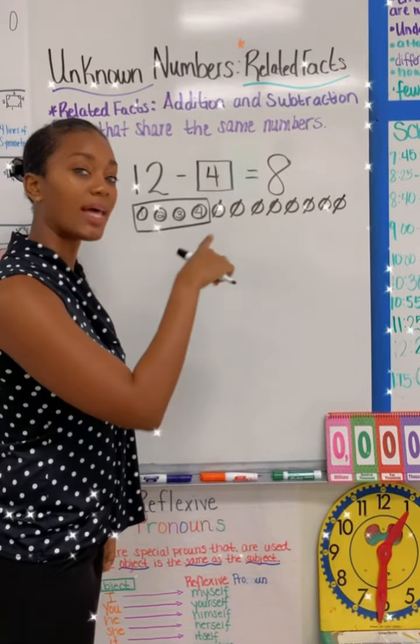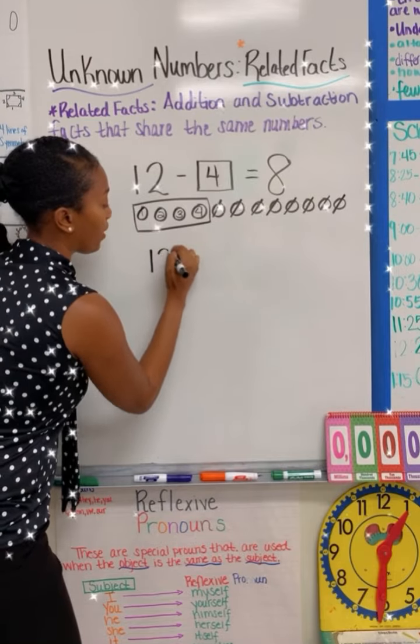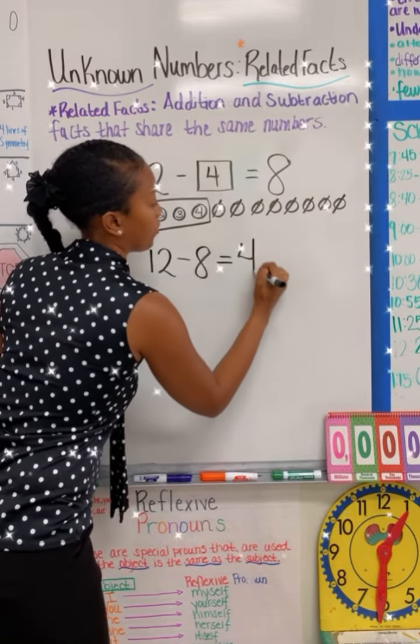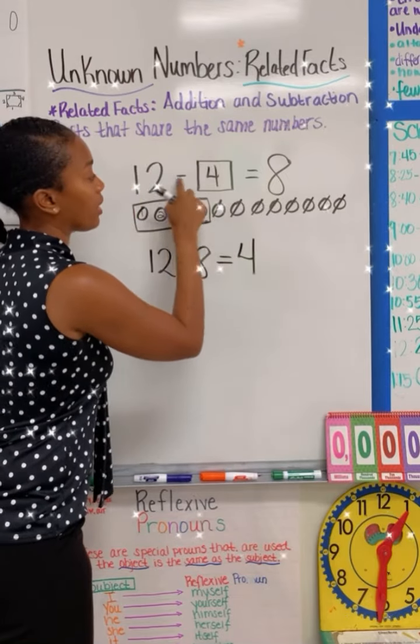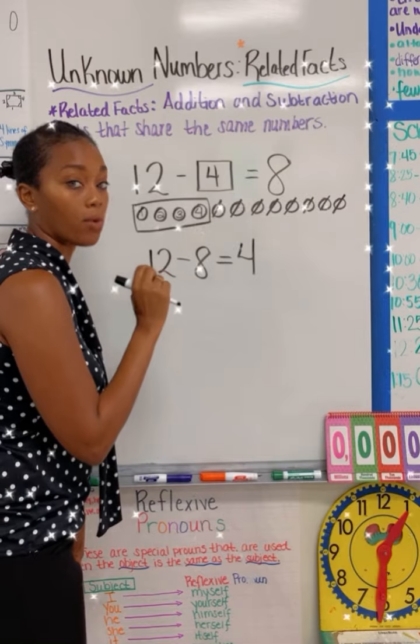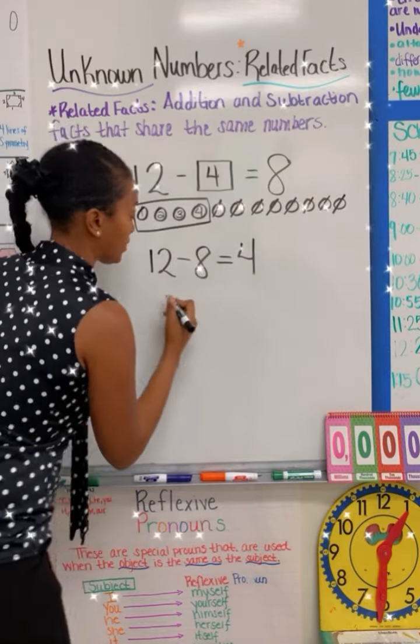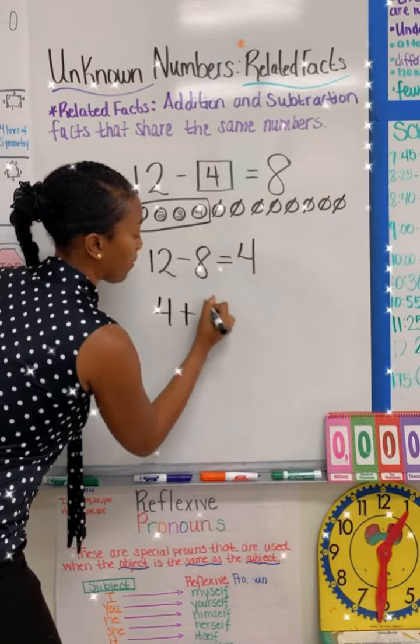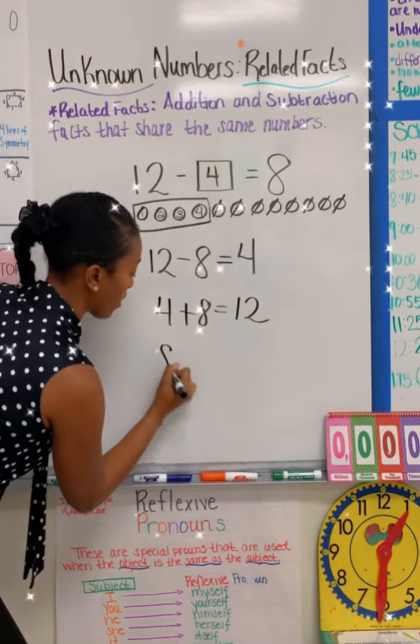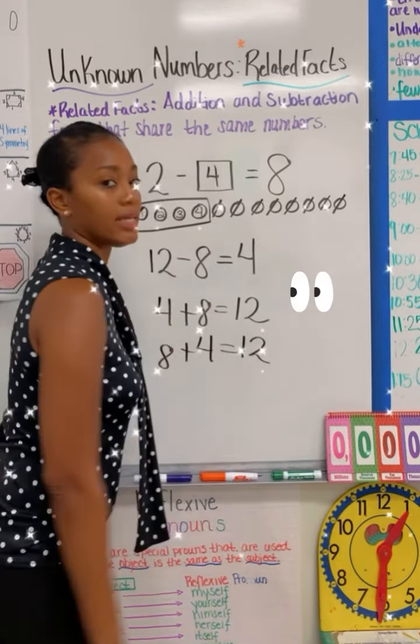Now let's write a related fact for this number. We can do 12 minus eight is equal to four. Remember, I have to use the same numbers in the proper order. If I want to make an addition related fact, that would be four plus eight is equal to 12, or eight plus four is equal to 12.